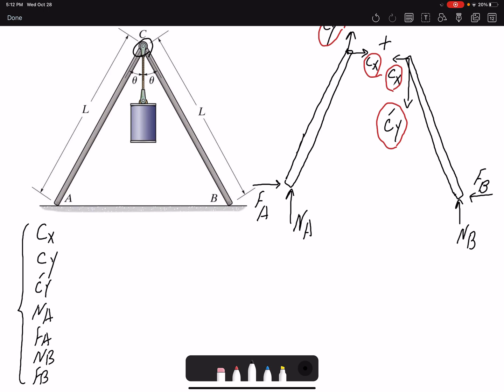And then we can only write three equilibrium equations for each free body diagram, so total six equations. We have a relation between NA and FA, but in that relation we need mu which we don't have.